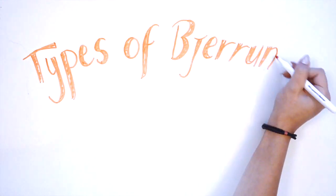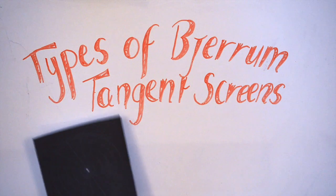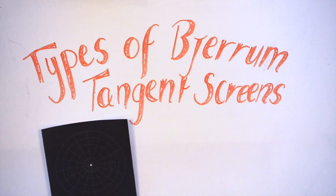The extent of the Bjerrum visual field maps out an individual's 25 to 30 degree visual field. In some instances, if the patient cannot see the central white target, the Bjerrum is modified to meet their visual requirements.